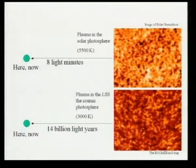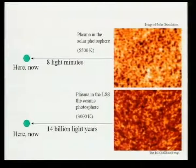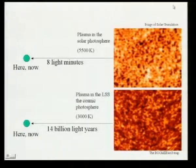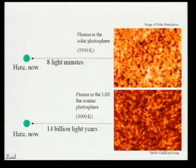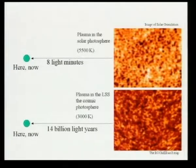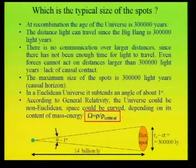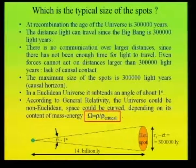We expect to have a fossil image of the universe as it was 14 billion years ago. It is similar to looking at the surface of the sun: you see structure because there are hotter and colder regions, and that image travels for eight minutes before getting to your eyes. In the same way, the image of this cosmic photosphere travels 14 billion light years before getting to our telescopes, and meanwhile from visible light it becomes microwaves because of the expansion and redshift.